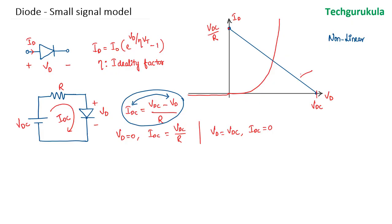Wherever this line — which is an indication of the equation IDC equals VDC minus VD over R — intersects the current-voltage characteristics of the PN junction diode, that will be the corresponding voltage across the diode. We will say this is VD, and the current that would flow through the diode will be ID, which is equal to the actual current flowing through the circuit IDC.